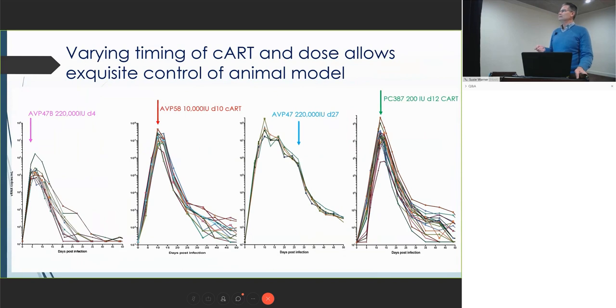At this time, we've done several different models of the barcode virus. One is this very high dose, very early treatment. The viral loads reach a reasonable amount, 10 to the fifth on average. You can also do a lower dose—this is a 10,000 dose. If you wait till day 10, the viral load is at 10 to the seventh. You can do post-peak. This is one of Lewis's studies with a 200 dose and a day 12 ART. This allows us control over the model, when to start ART, what dose we're going to use.